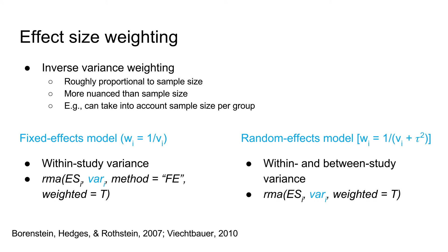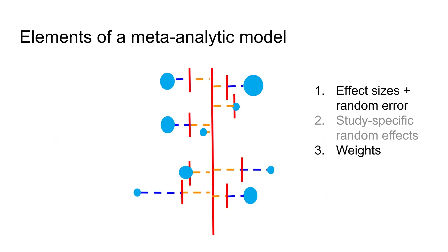A third element going into a meta-analysis is the weighting of effect sizes. The basic idea is to weight studies more that have higher precision due to larger sample size and/or smaller variance. Inverse variance weighting, taking the inverse of effect size variance, is often used for this purpose. In a fixed effect model, weighting takes into account the variance within each study, while in a random effects model it also takes into account between-study variance. Note that the calculation of effect size variance for within-subject studies with two data points requires knowledge of the correlation between these two measures. We have now added effect size weighting to our model.